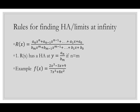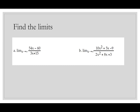Example: f(x) = (2x³ - 3x + 9) / (7x³ + 8x²). Looking at the leading terms — degrees are both 3, so equal. The horizontal asymptote is 2/7. Similarly, the limit as x → ∞ of (54x - 60)/(3x + 15) = 54/3 = 18. And the limit as x → ∞ of (10x² + 5x - 9)/(2x² + 8x + 3) = 10/2 = 5.